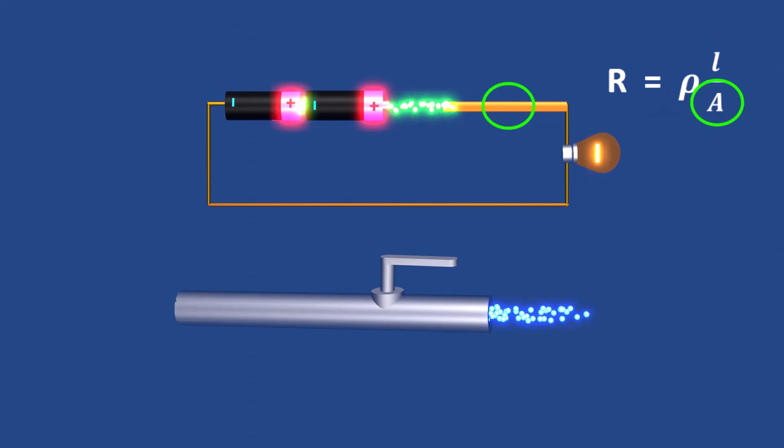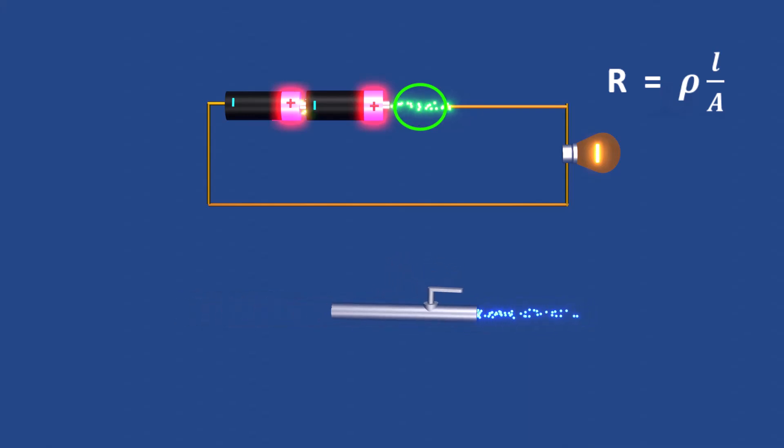Conversely, a smaller conductor has higher resistance and allows less current to pass, much like a narrow pipe restricting the flow.